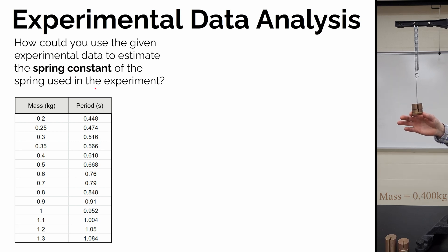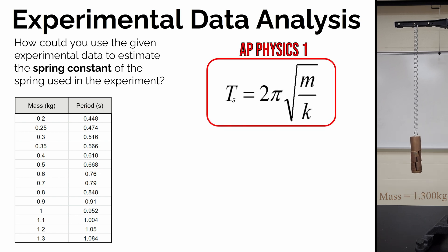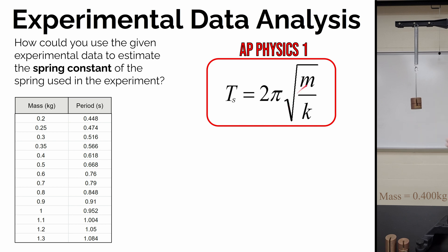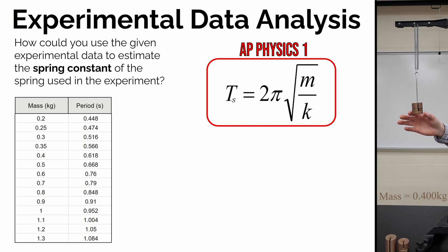The first thing you should do is think about whether we have an equation which relates mass, period, and spring constant. From your AP Physics 1 equation sheet, the period of a spring-mass system is equal to 2π times the square root of mass divided by the spring constant. If you have to make a graph to pull some value off to figure out the spring constant, you want to make a linear relationship so that the slope allows you to calculate the spring constant.